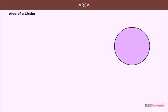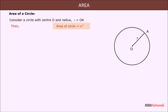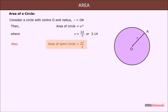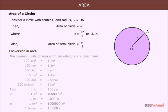Area of a Circle: Consider a circle with center O and radius R equal to OA. Area of a circle equals πR², where π equals 22/7 or 3.14. Also, the area of a semicircle equals half of πR².